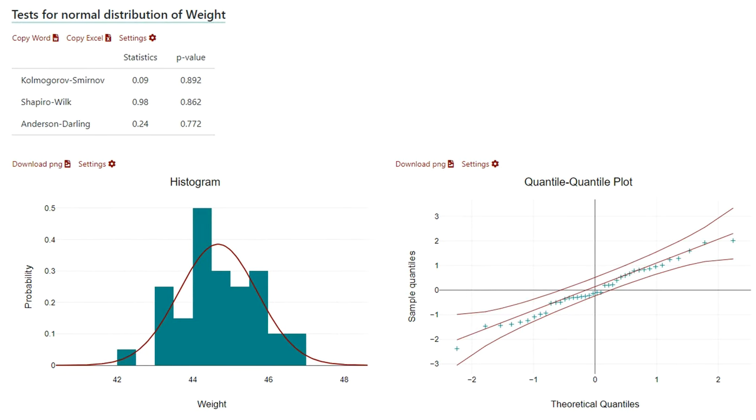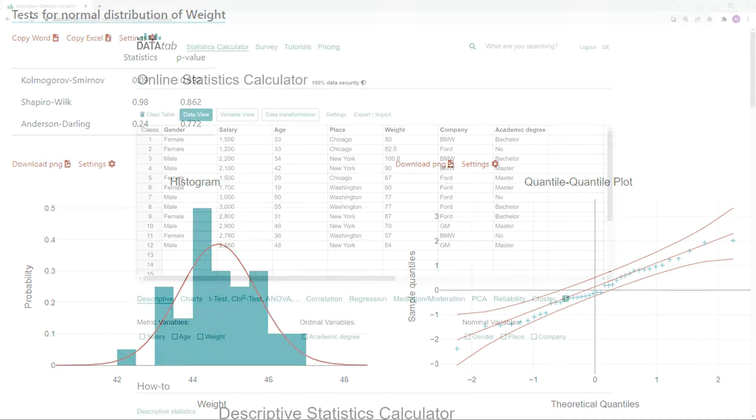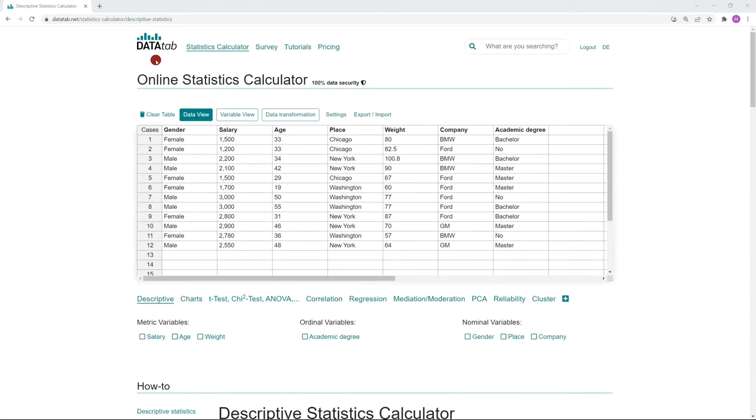If you use DataTab in order to test for normal distribution, you get the following evaluation. First, you get the analytical test procedures clearly arranged in a table. Then come the graphical test procedures. How you can test your data with DataTab for normal distribution, I will show you now.